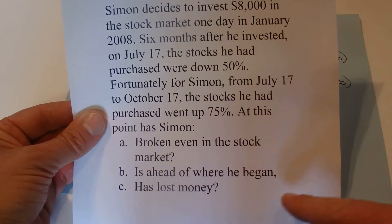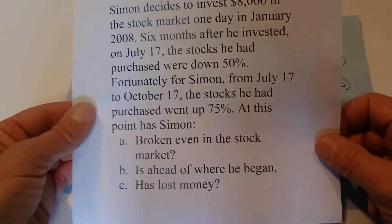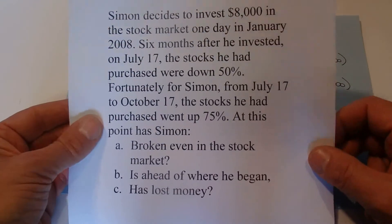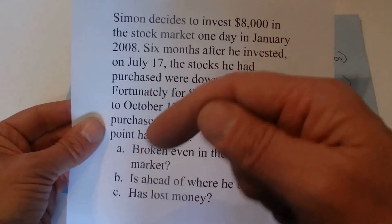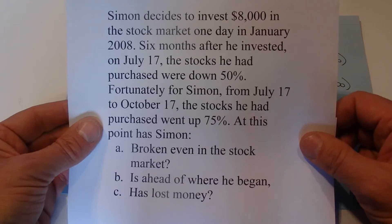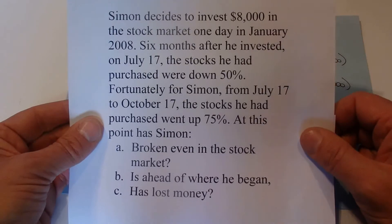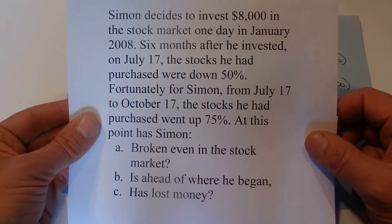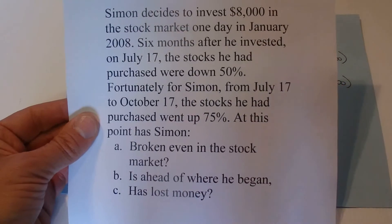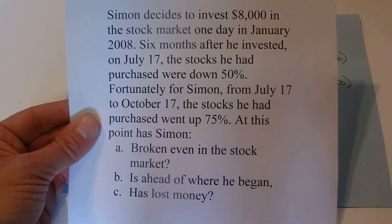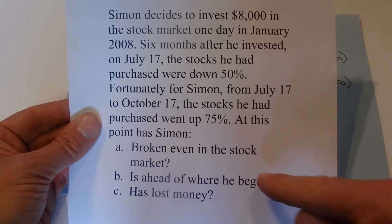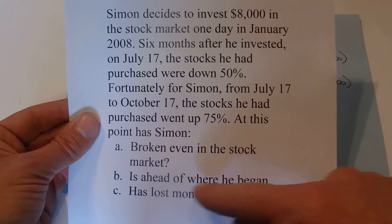If you want to think about the answer, press the pause button in the bottom left-hand corner. Otherwise, I'm going to go straight into the answer. The most usual answer to this question when people read it is that he must have made money — he must be ahead of where he began, which would be option B.